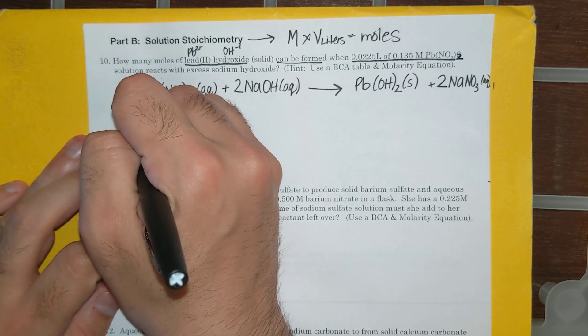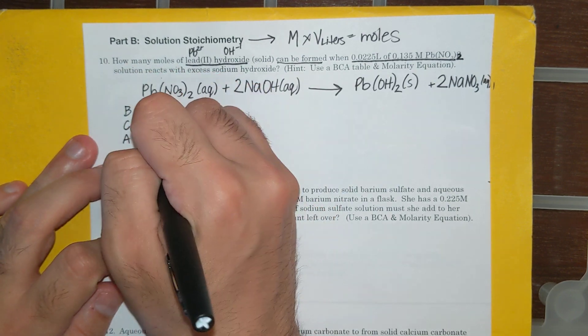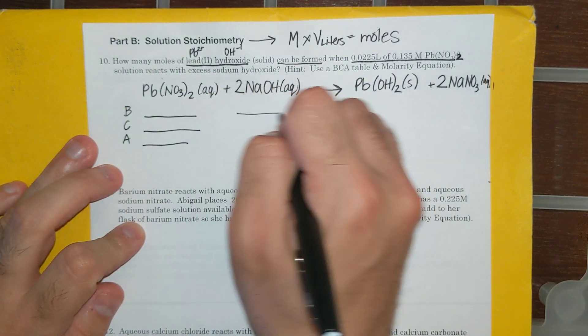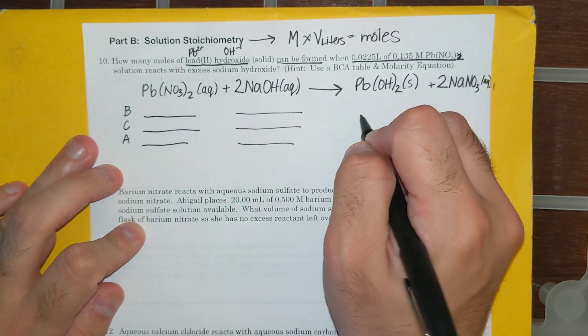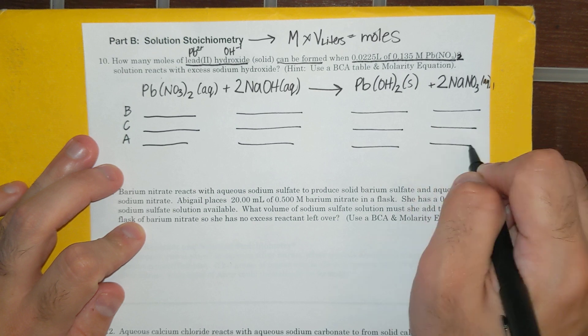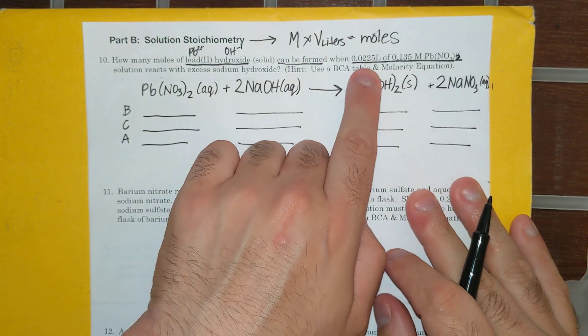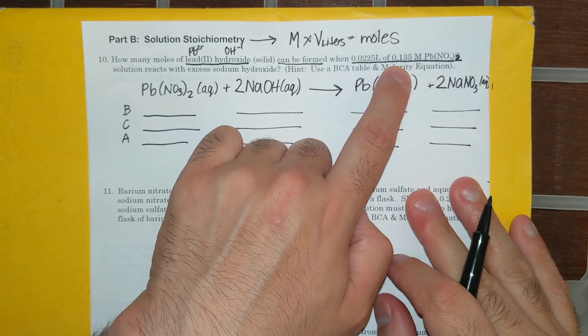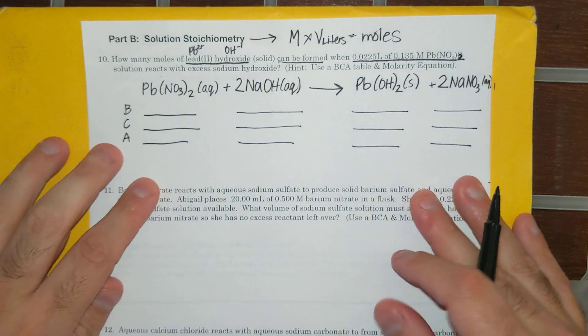Now, using a BCA table and my favorite equation, I'm going to be able to figure out my answer, because this answer asks me for moles, so it's going to be straightforward. So I have 0.0225 liters of 0.135 molar lead nitrate.